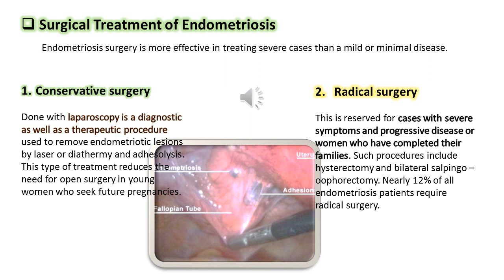Surgical treatment of endometriosis is more effective in treating severe cases than mild or minimal disease. Number 1: Conservative surgery, done with laparoscopy, is a diagnostic as well as therapeutic procedure used to remove endometriotic lesions by laser or diathermy and adhesiolysis. This type of treatment reduces the need for open surgery in young women who seek future pregnancy.